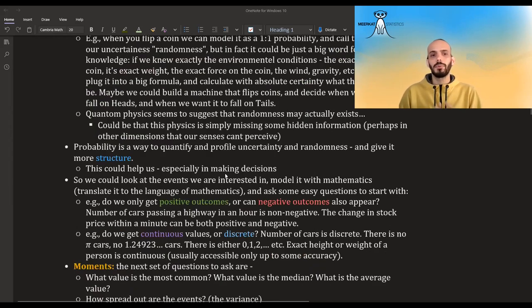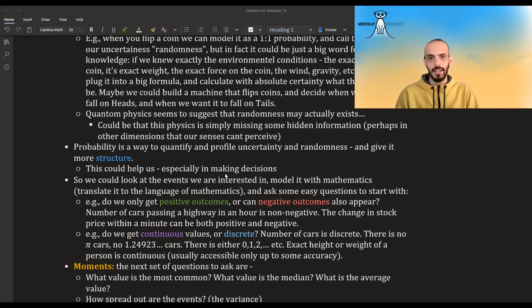In any case, probability is a way to kind of quantify all this uncertainty and give it more structure. And why we want this? Well, it could help us make better decisions in our lives. And so the first way to start giving it some structure is first translate everything into the mathematical language, translate it to mathematics, give it zero, one, etc. And then try to come up with some questions to help us classify the uncertainty better.